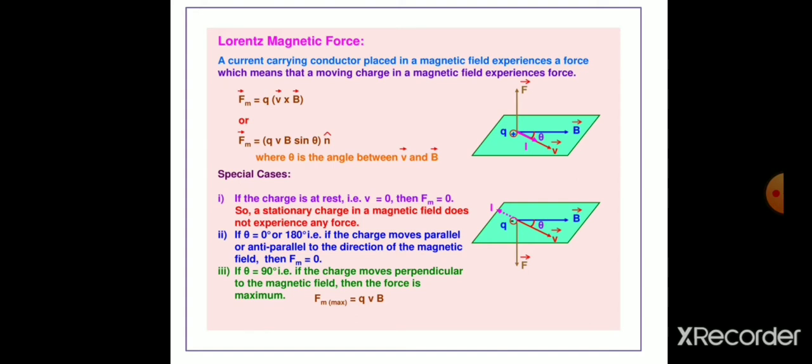Let us discuss about the magnetic force. A current carrying conductor placed in a magnetic field experiences a force, which means that a moving charge in a magnetic field experiences force, known as magnetic force, which is given by Fm = Q × V cross B. Here, Fm is the magnetic force, Q is the charge which is moving, V is the velocity with which this charge is moving, and capital B represents the magnetic field.